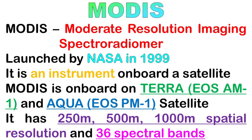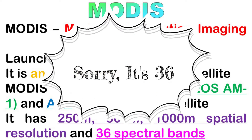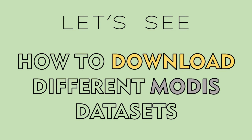MODIS full name is Moderate Resolution Imaging Spectroradiometer. It is not a satellite but an instrument onboard a satellite. There are two types of MODIS instrument: one is for Terra or land, and another is Aqua or water. This mission was launched by NASA. MODIS has 50 meter, 500 meter, and 1000 meter spatial resolution and 36 bands. So let's see how we can download MODIS dataset for free.